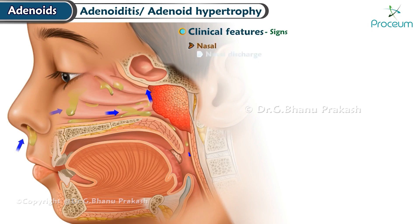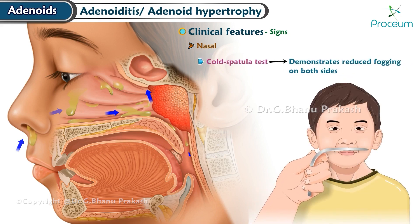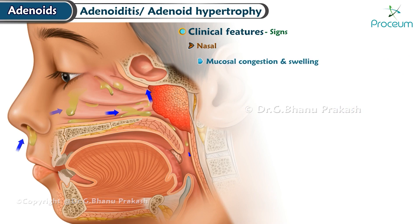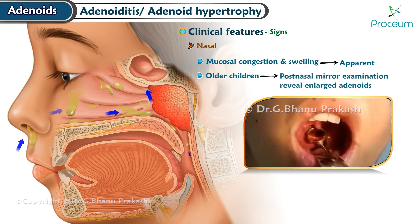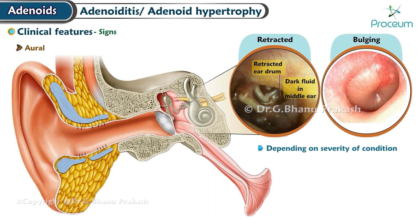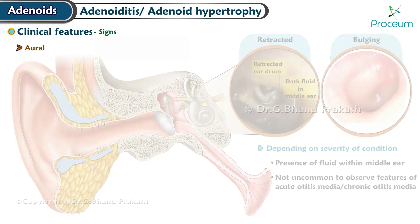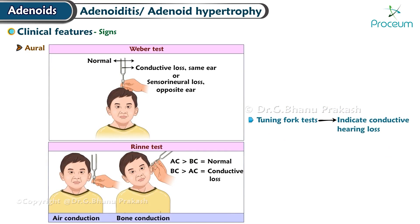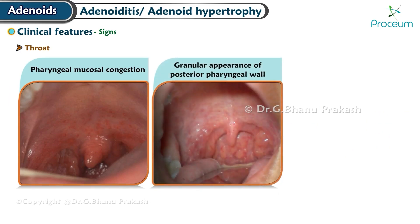Signs — nasal: nasal discharge is observed in the floor of the nasal cavity and can extend to the middle meatus; when sinusitis is present, the cold spatula test demonstrates reduced fogging on both sides. Mucosal congestion and swelling may be apparent; in older children, a post-nasal mirror examination may reveal enlarged adenoids. Oral: the eardrum may appear retracted or bulging depending on severity; fluid level within the middle ear may be observed. Features of acute or chronic otitis media are not uncommon. Tuning fork tests indicate conductive hearing loss.